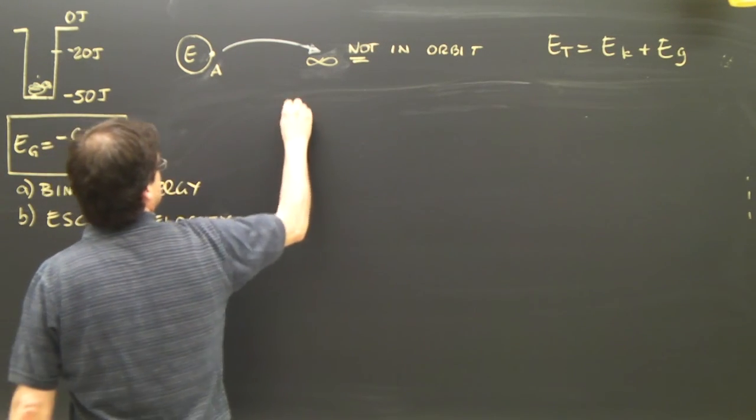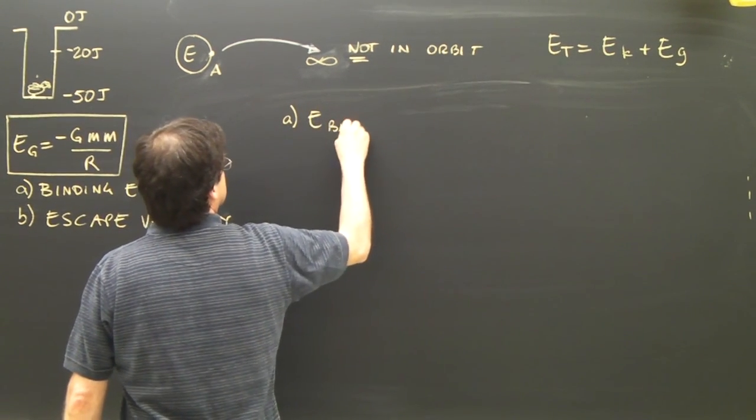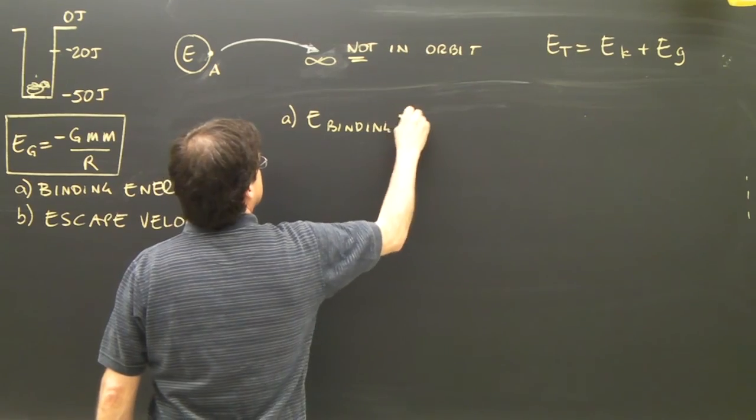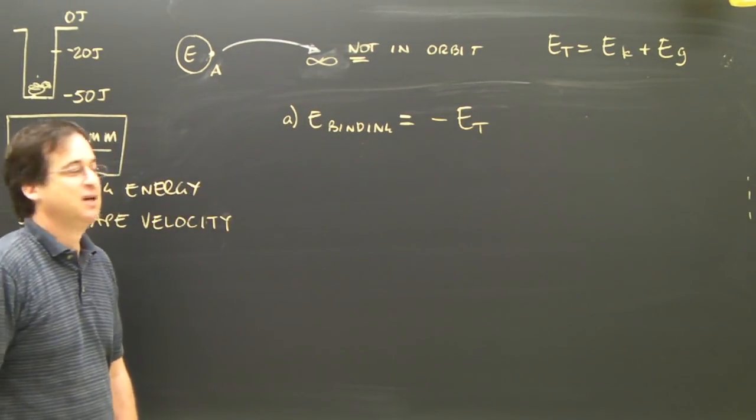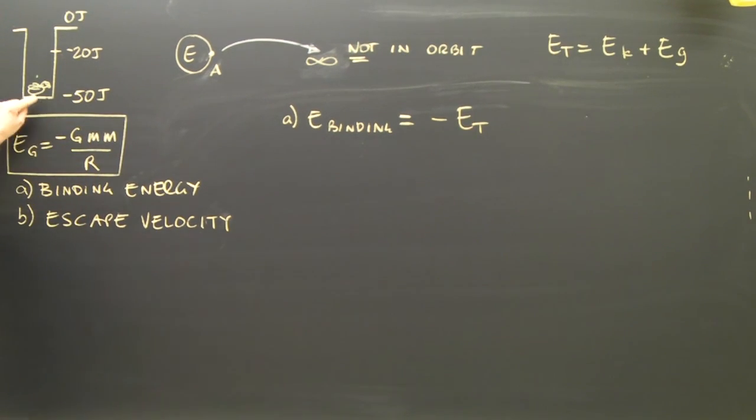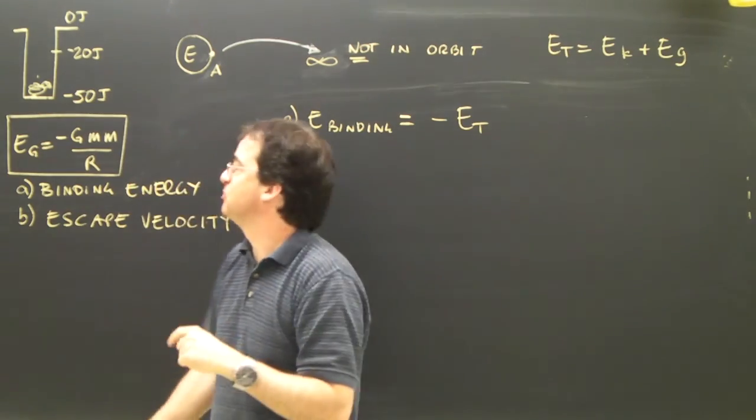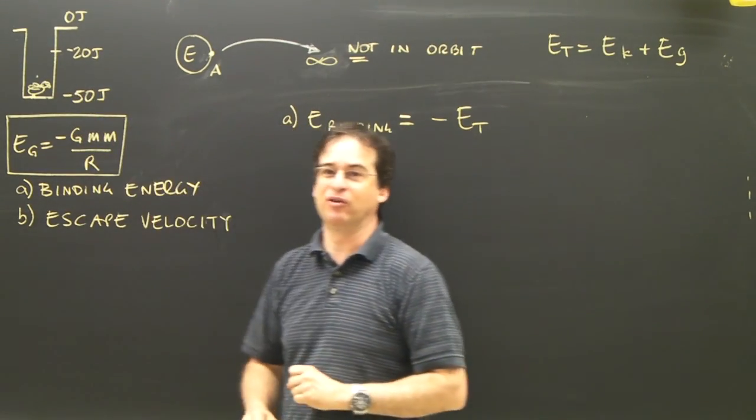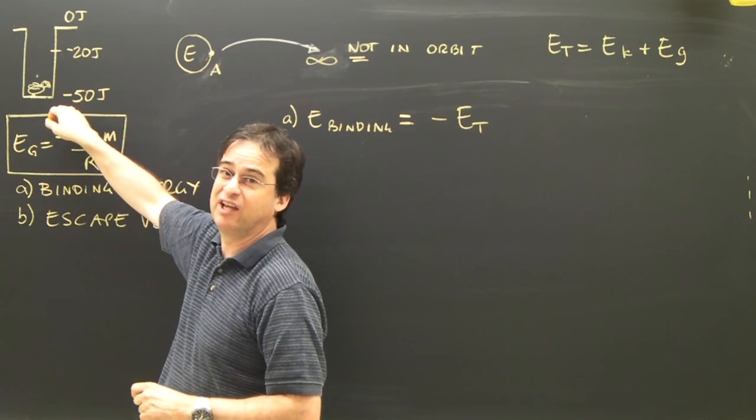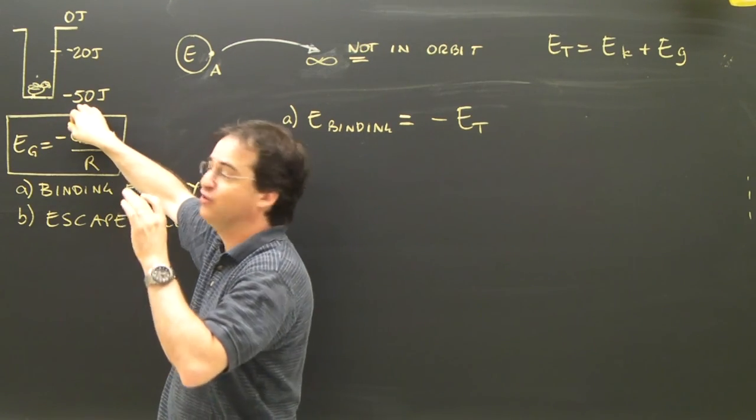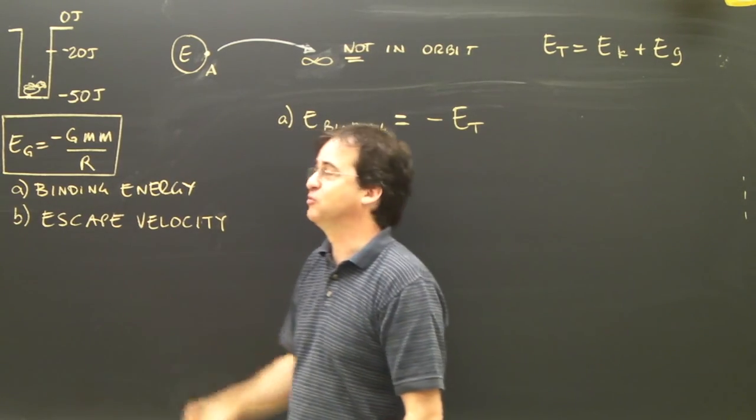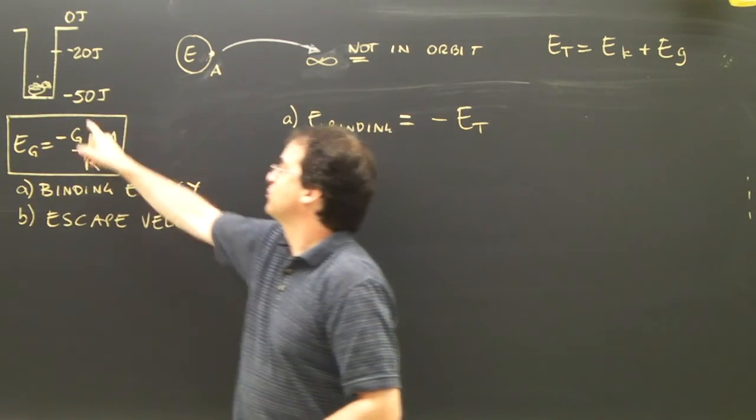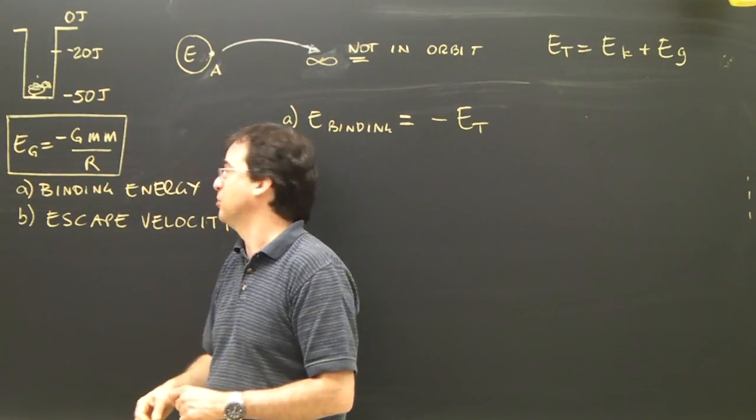Well, the binding energy is equal to the negative of the total energy. Because what the binding energy is, if this chicken is in this well, how much energy must I add to it to get it to come out of the well? Well, its gravitational energy there is negative 50, so I have to add 50 to get it to zero, which is escaping to infinity. So it's really just the opposite of whatever energy total it has at that point.